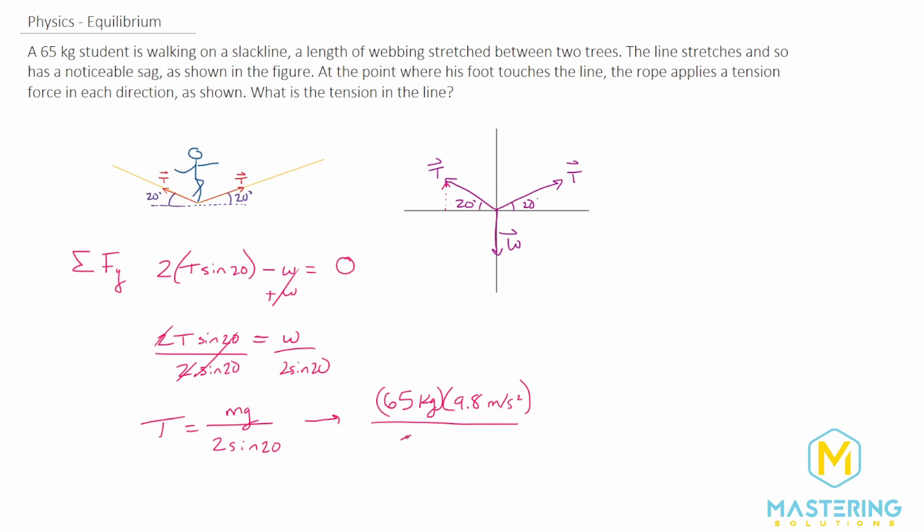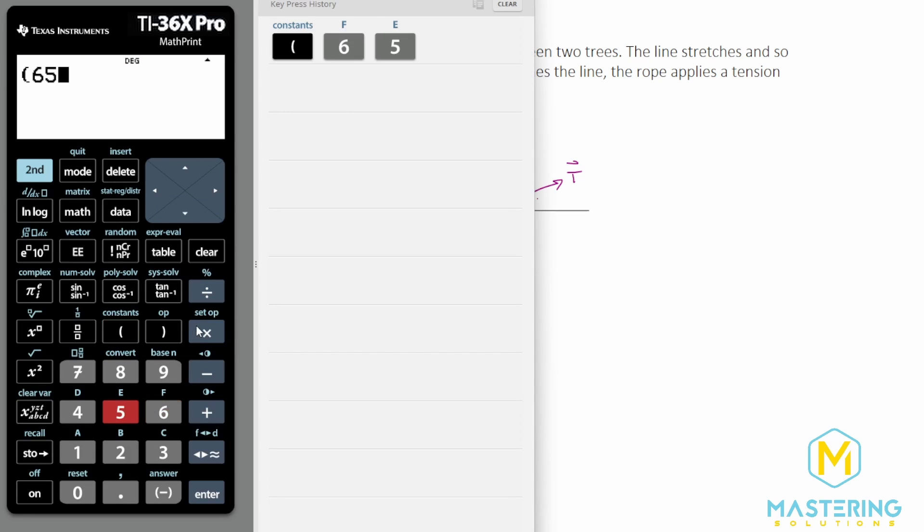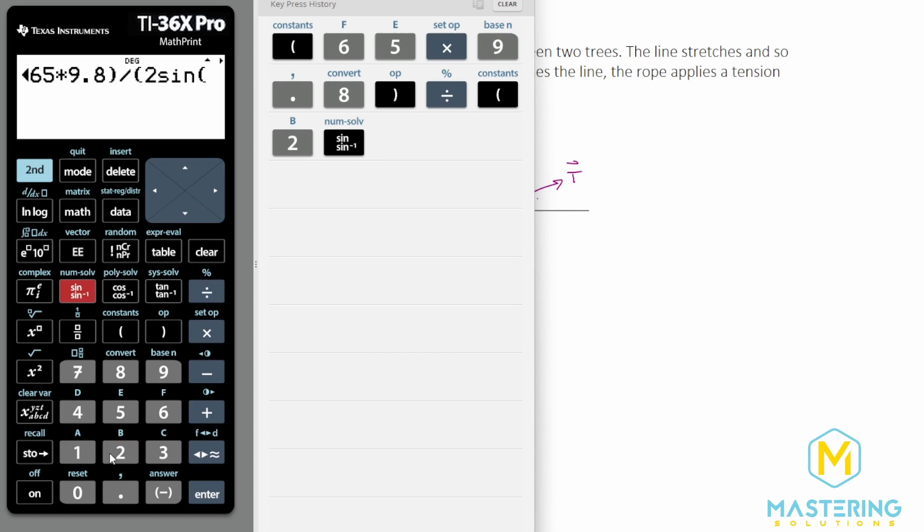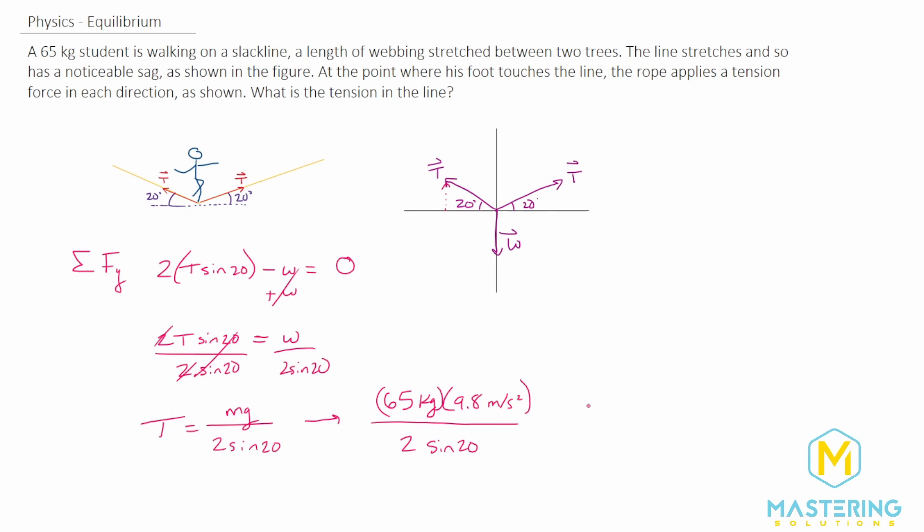So we have 65 times 9.8 divided by 2 times sine of 20. T equals 931 newtons.